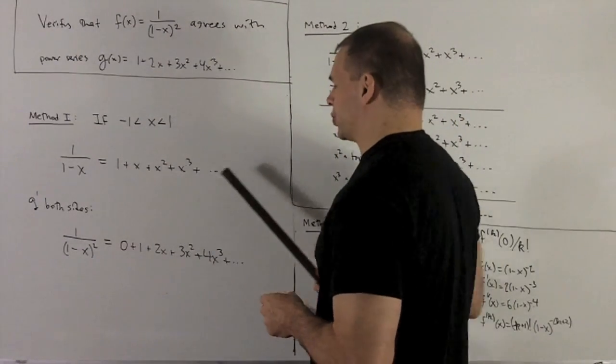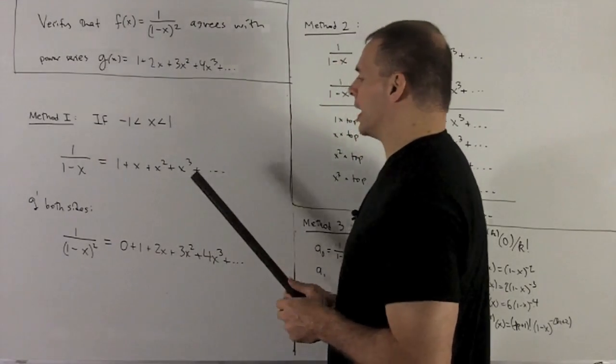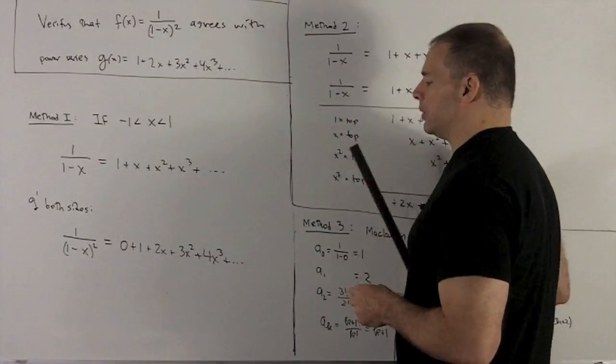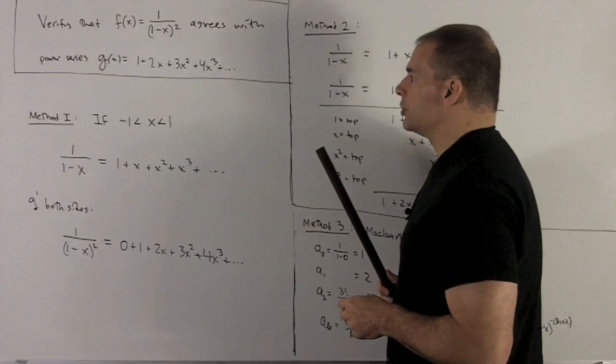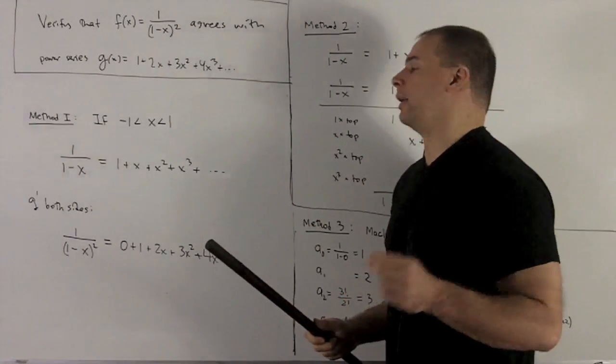On this side, I can just take the derivative term by term, so I'll get 0, 1, 2x, 3x², 4x³, and we just follow it on out. So you notice this is going to agree with what we have here. That's Method 1.